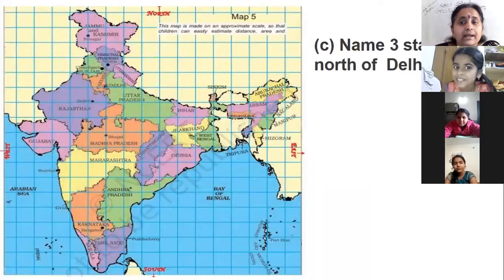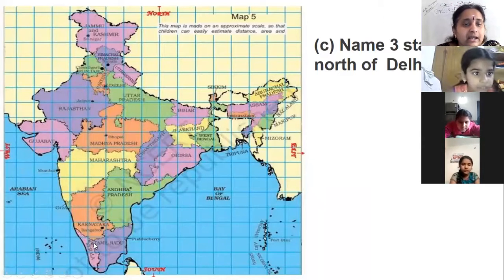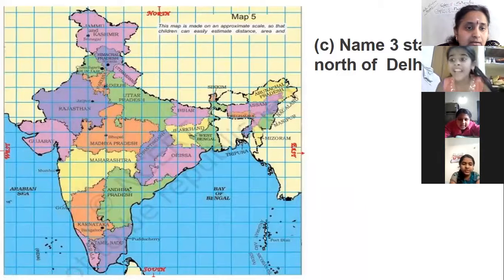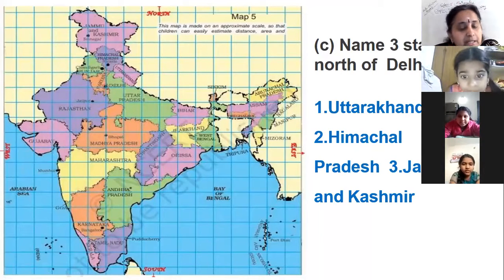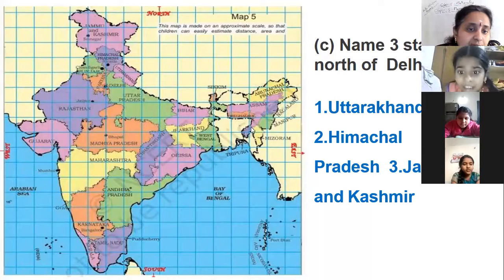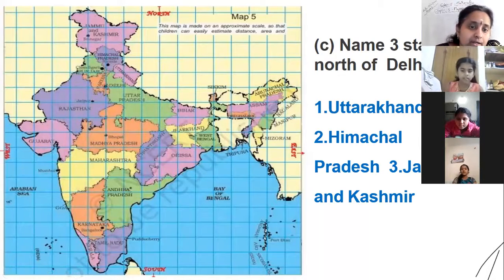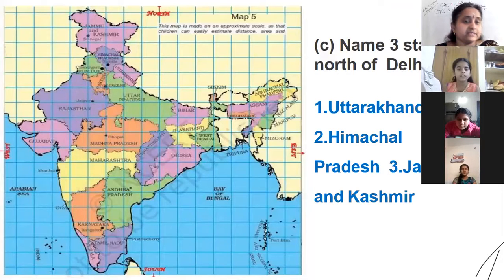Name three states to the north of Delhi. Where is Delhi? He said left side — okay, the top of the states. You have to say why, because north is at the top.